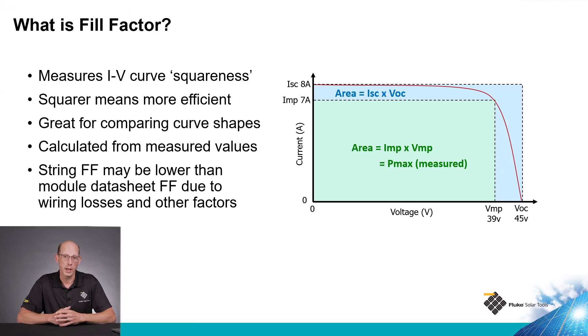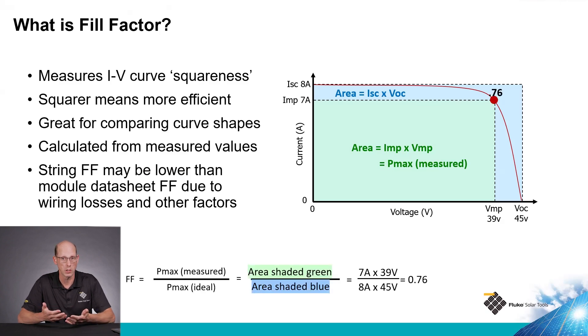The formula for calculating fill factor is maximum power voltage times maximum power current, which is the wattage of the module, divided by short circuit current times open circuit voltage. This is going to give us a number that's less than one. It will never be more than one or even equal to one because we can't have a short circuit and an open circuit at the same time.